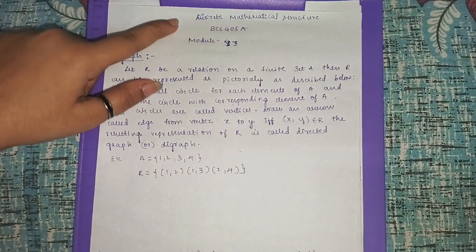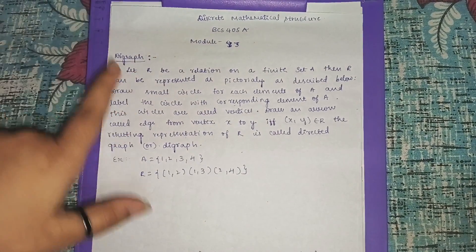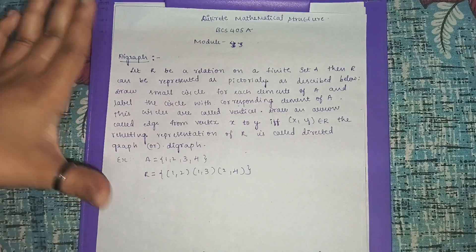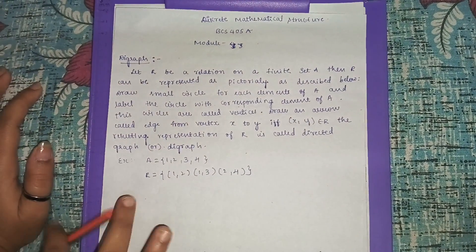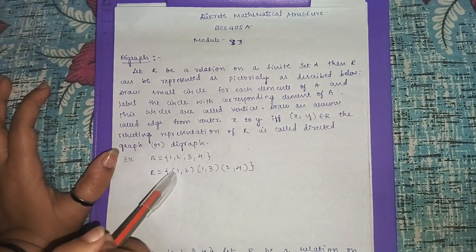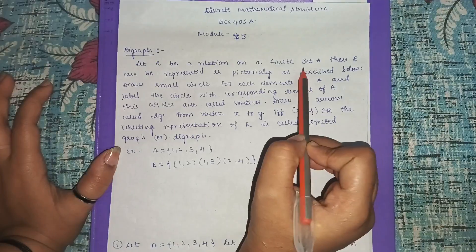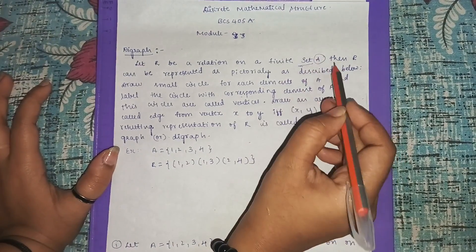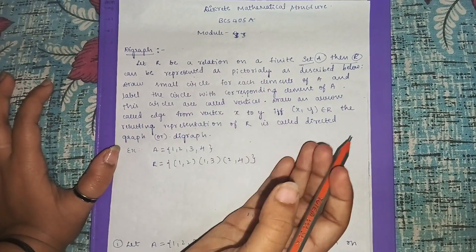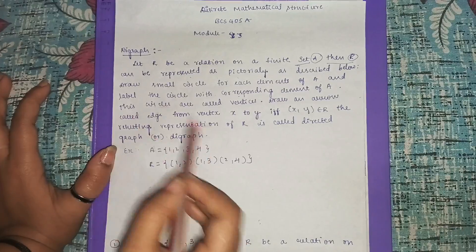In this video we'll be covering Discrete Mathematical Structure BCS 405, Module 3. The important topic is digraph — it's a very easy topic and will surely be asked in the paper. First, let's know the definition of digraph. Let R be a relation on a finite set A. Then R can be represented pictorially as described below.